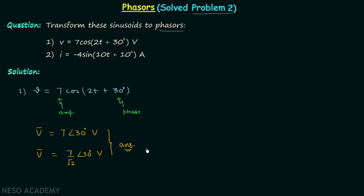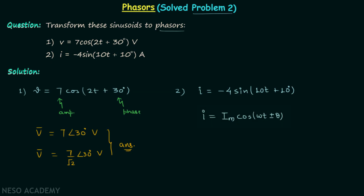Now we will move on to our second sinusoid, which is i equal to minus 4sin(10t + 10°). We can't have the phasor representation directly like this. The reason is we do not have the standard form of the parent signal. The standard form is i equal to Im·cos(ωt ± θ), and here we have minus 4sin(10t + 10°).